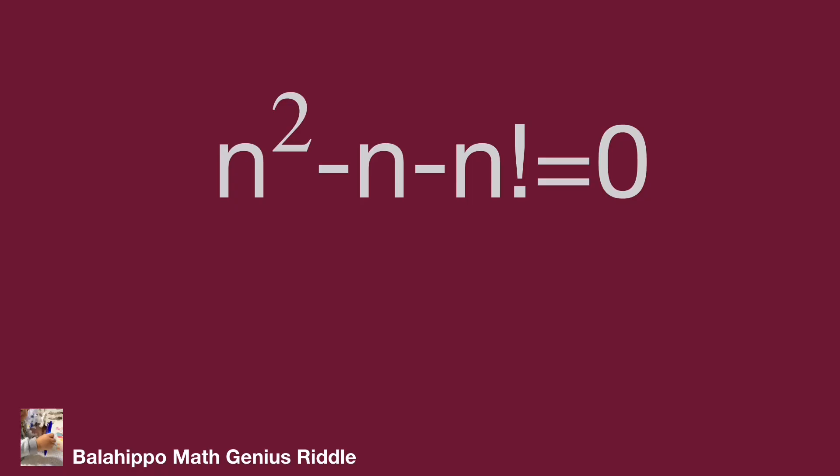The equation is n squared minus n minus n factorial equal to zero. Find the value of n. Before we solve the question, let's recap what n factorial is.